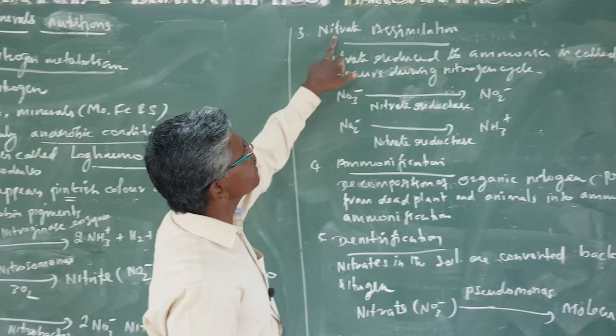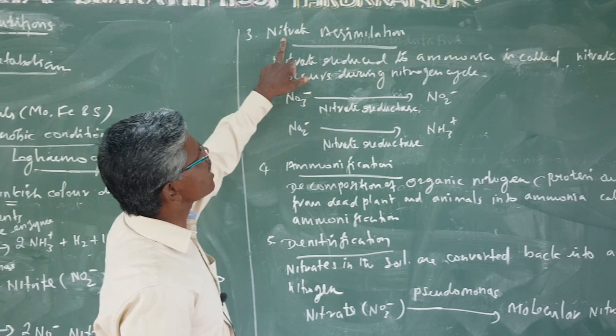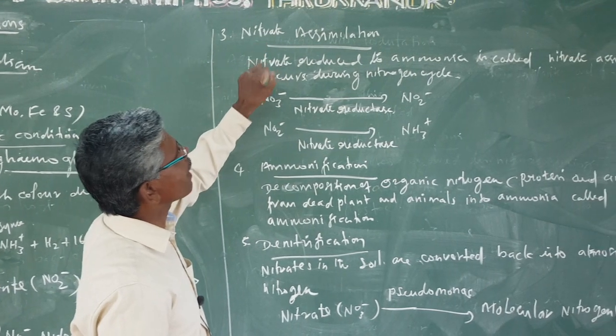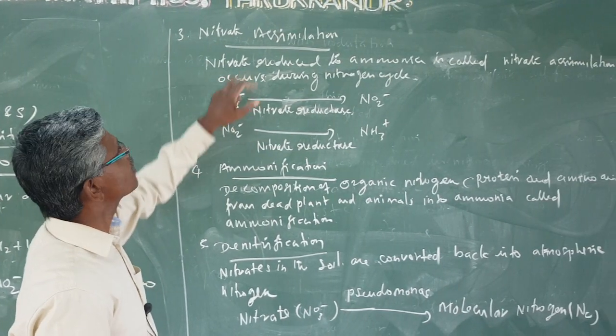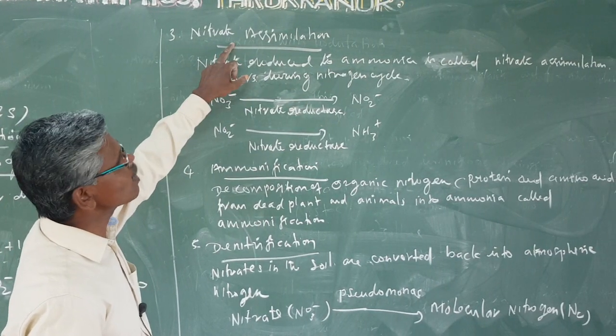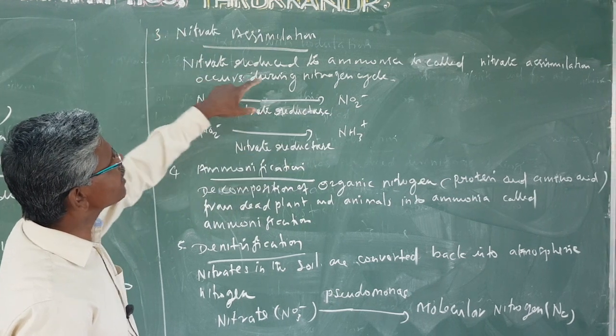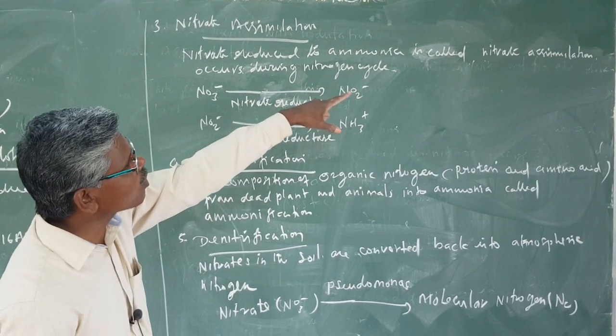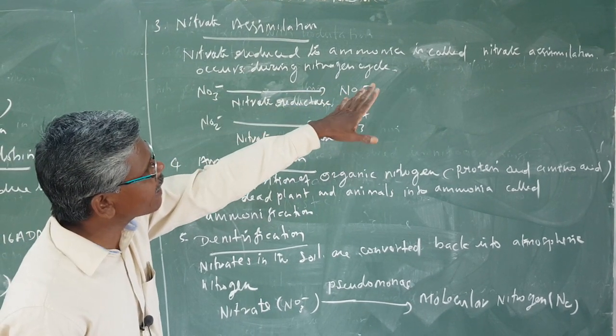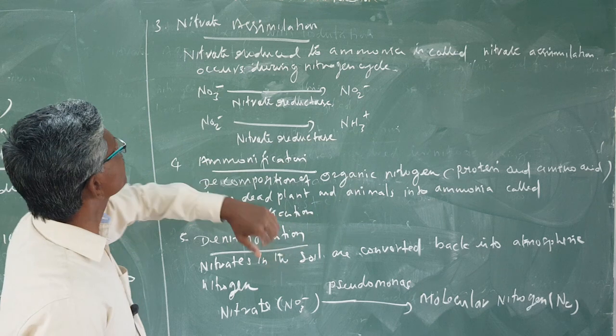Next is nitrate assimilation. Assimilation means utilization. Nitrate is reduced to ammonia — that process is called nitrate assimilation.